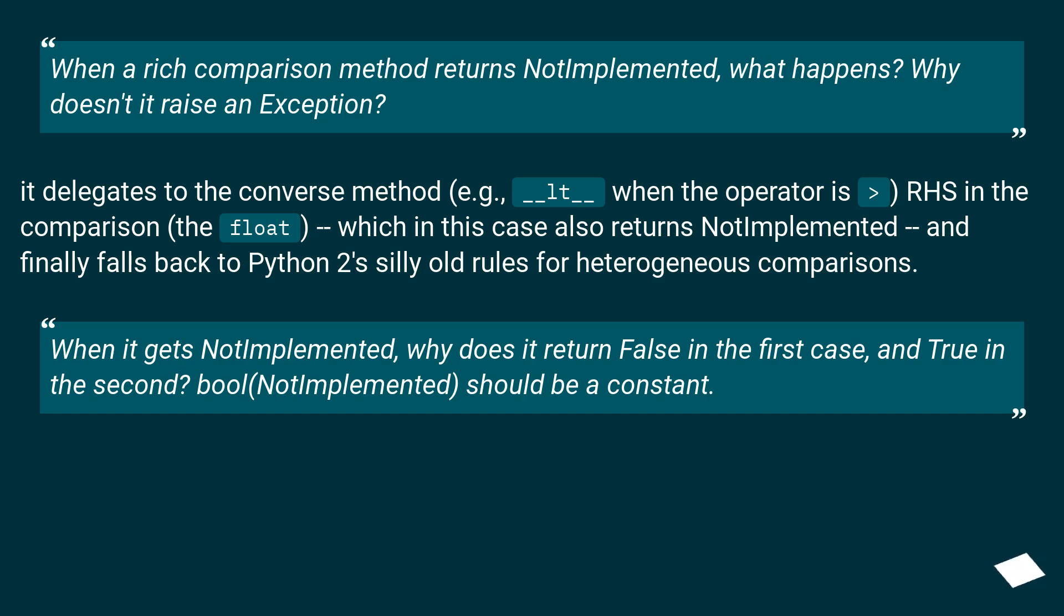When it gets NotImplemented, why does it return false in the first case and true in the second? Bool of NotImplemented should be a constant.